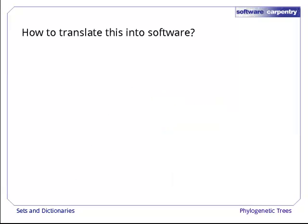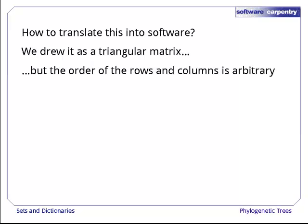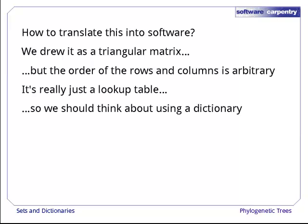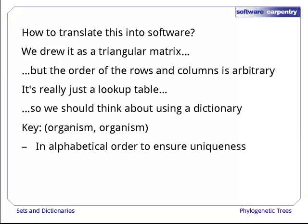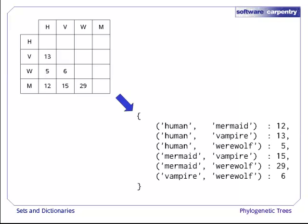Right, how do we translate this into software? We illustrated our algorithm with a triangular matrix, but the order of the rows and columns is arbitrary. It's really just a lookup table mapping pairs of organisms to numbers. And as soon as we think of lookup tables, we should think of dictionaries. The keys are pairs of organisms, which we will keep in alphabetical order so that there's no confusion between HW and WH. And the values are the distances between those organisms. So this matrix becomes this dictionary.